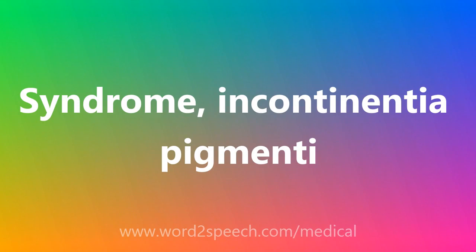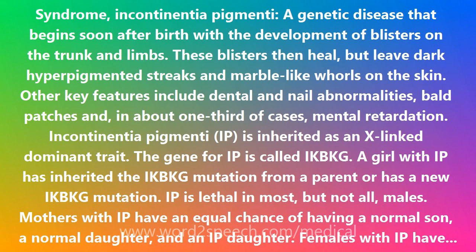Incontinentia Pigmenti syndrome is a genetic disease that begins soon after birth with the development of blisters on the trunk and limbs. These blisters then heal, but leave dark hyperpigmented streaks and marble-like whirls on the skin. Other key features include dental and nail abnormalities, bald patches, and, in about one third of cases, mental retardation.